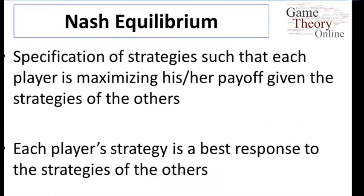The definition of Nash equilibrium is unchanged from what we looked at before. We're going to specify strategies for every player, and we want those strategies to be best responses to the strategies of the other players. Each player just has to be maximizing their utility, anticipating the strategies of the others. The only difference is instead of looking at normal form strategies, now we're working with behavioral strategies in the extensive form.